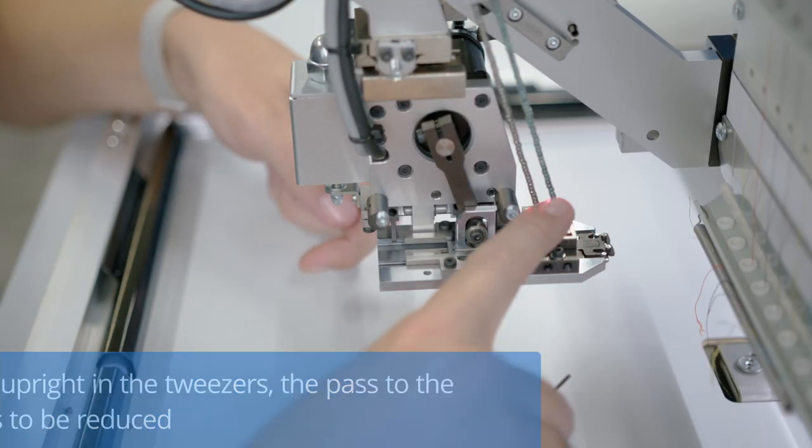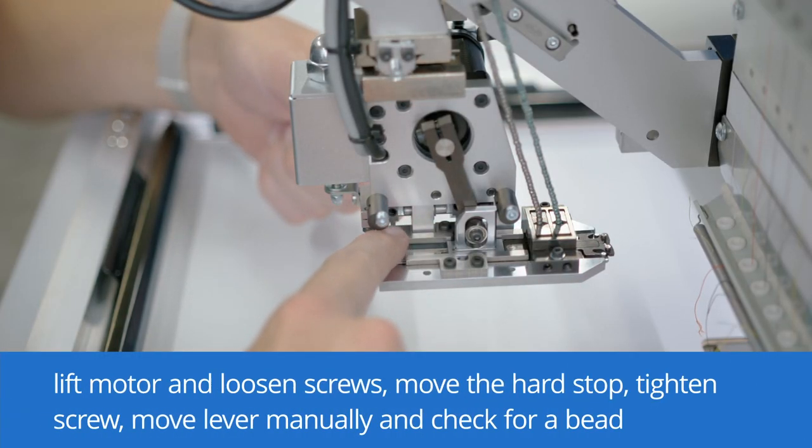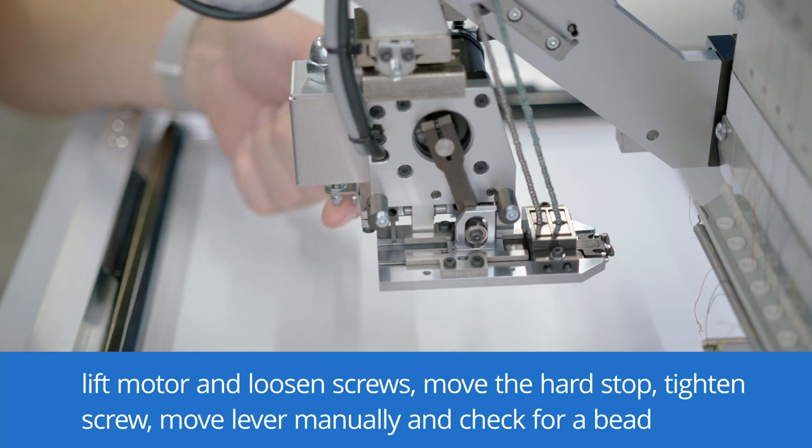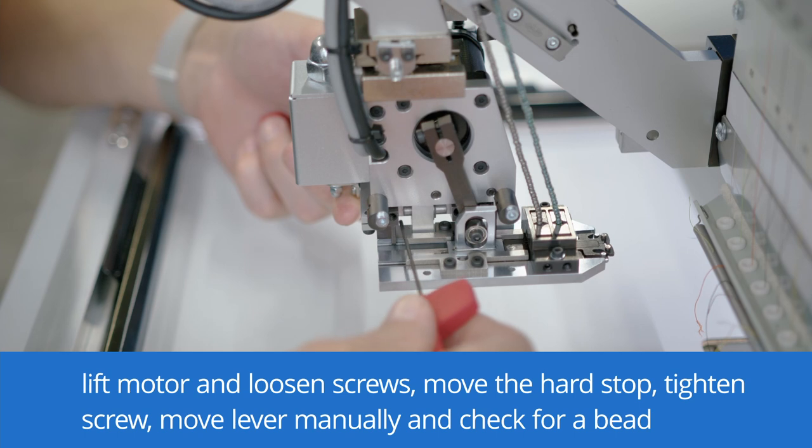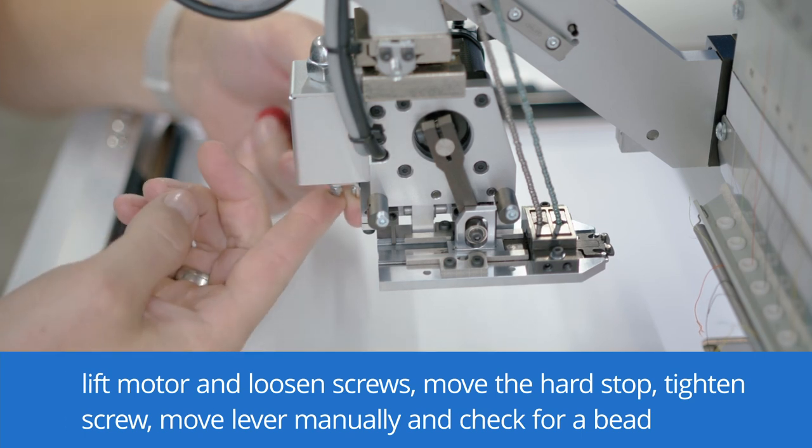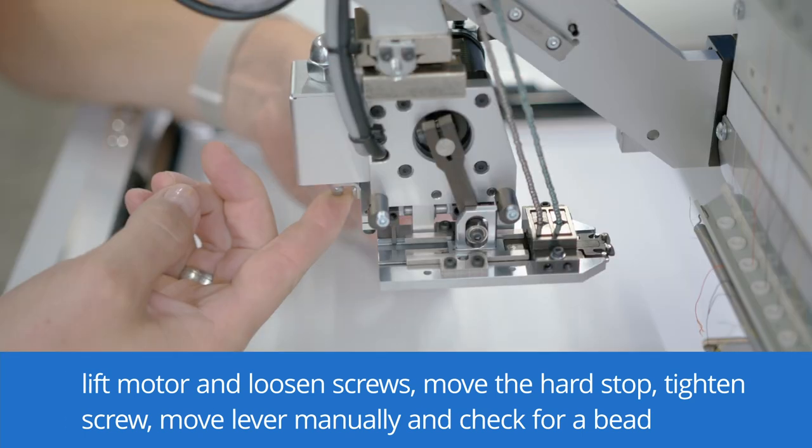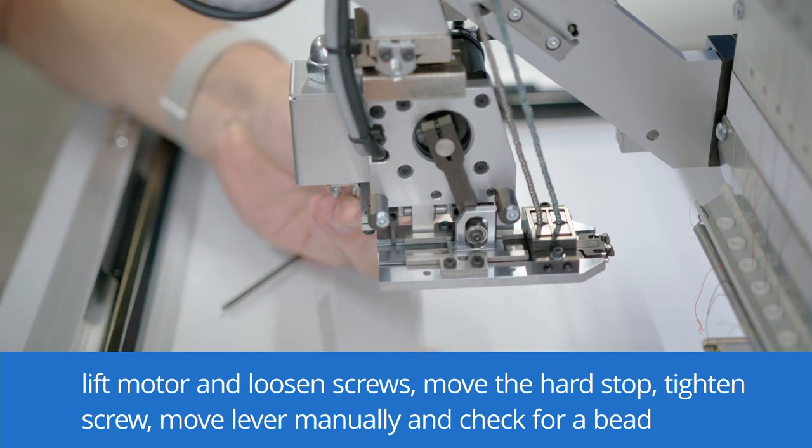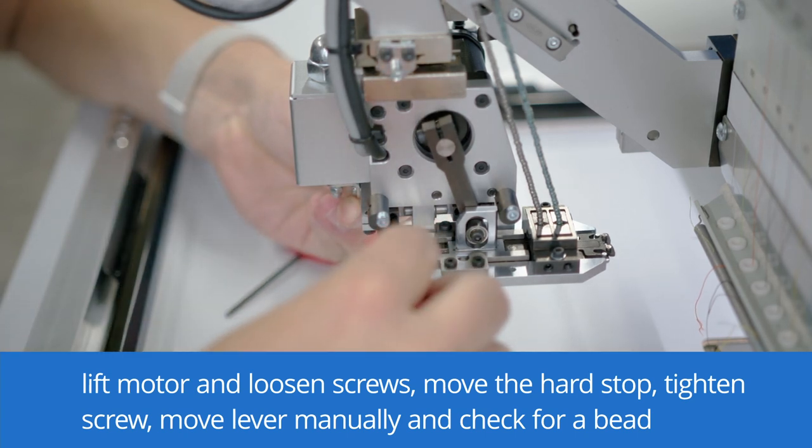To set the hard stop for the outer beads, we need to lift the motor here by pushing it. Then we need to loosen this screw in here and the one on the opposite side. Now we are able to move the hard stop. Bring the hard stop in the position and tighten the screw.